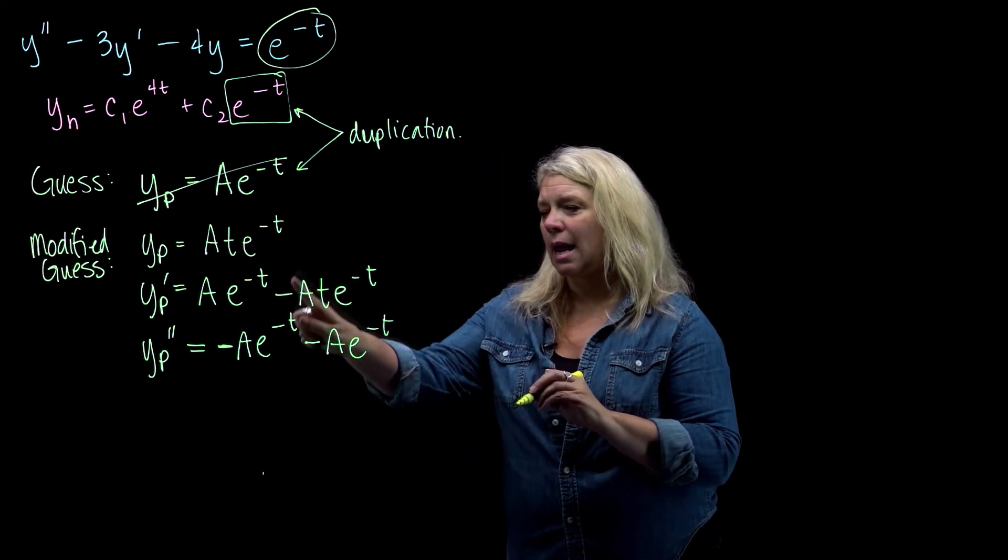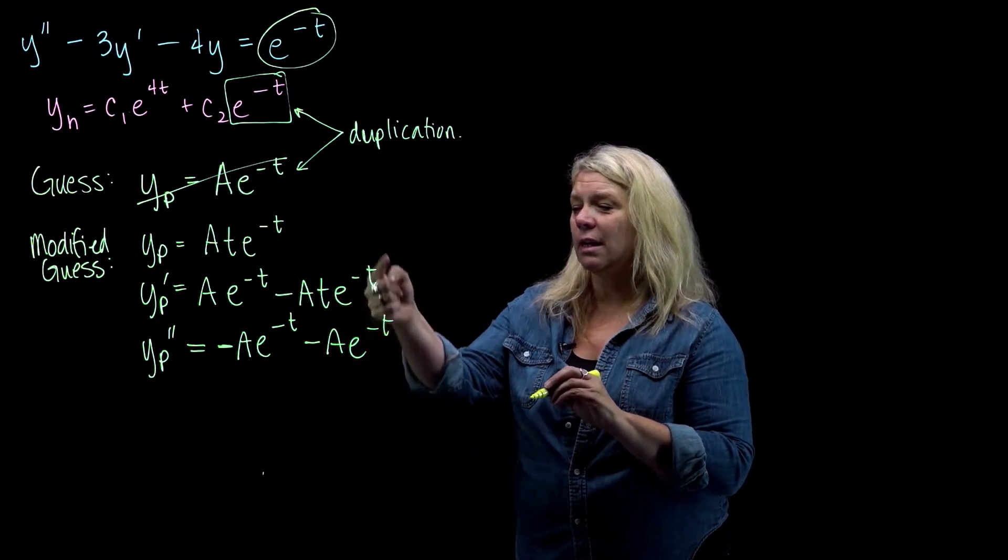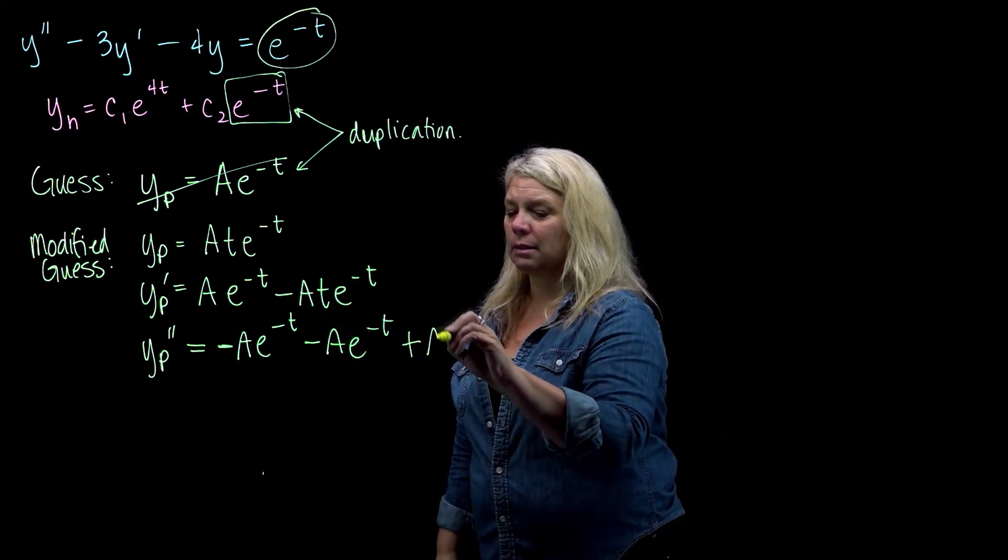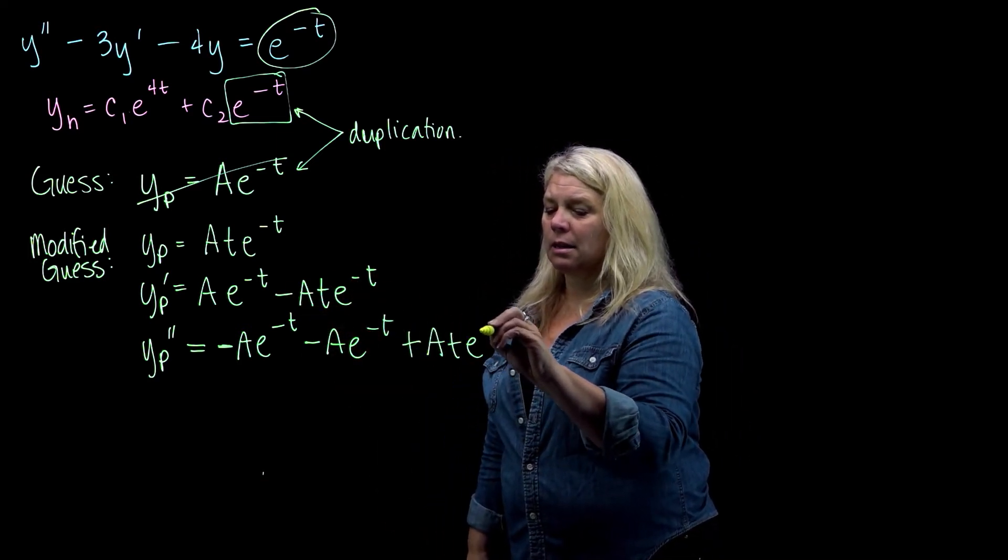And then minus A t times the derivative of e to the negative t, I'll get an extra negative out front, so plus A t e to the negative t.